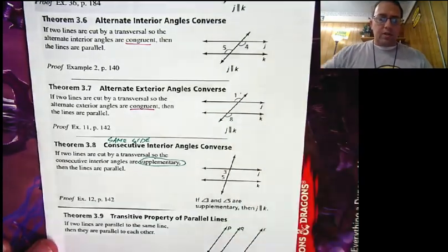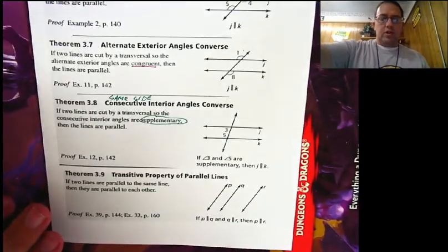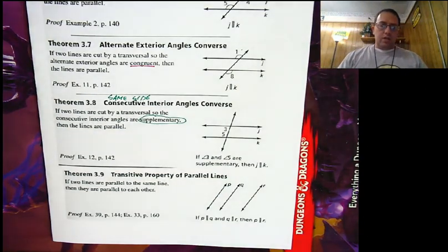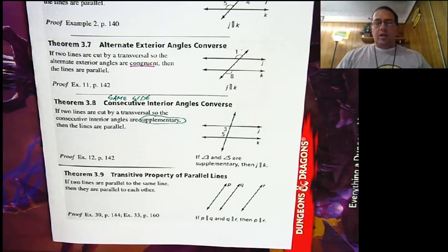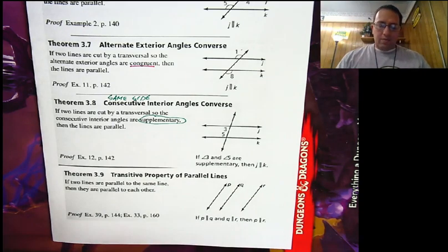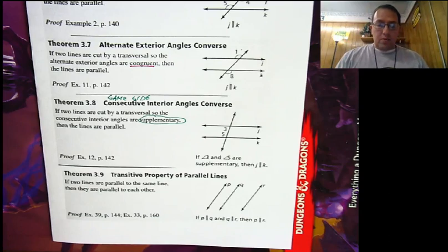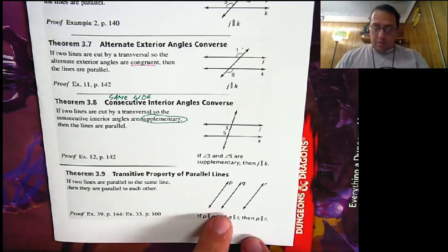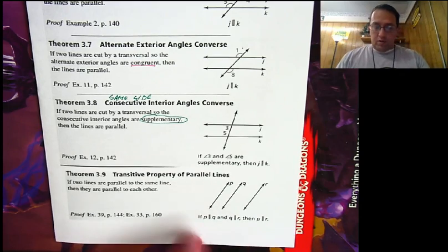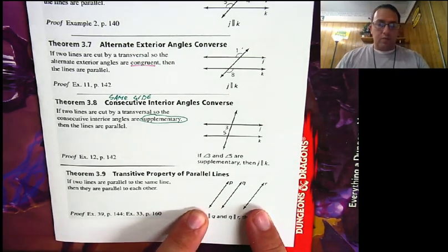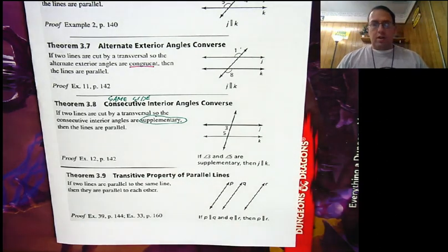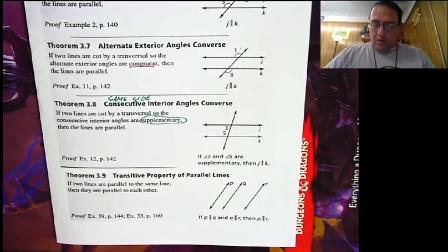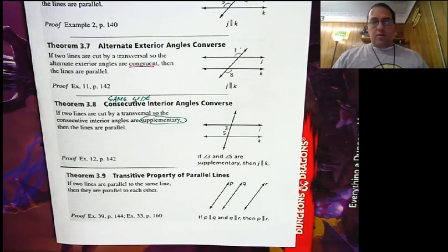We do have one completely new theorem here, and this is the transitive property of parallel lines. You all remember the transitive property of equality or congruence — if two things are congruent to the same thing, then they are congruent to each other. Same thing is true with parallel lines: if two lines are parallel to the same line, then they are parallel to each other. So since p is parallel to q and r is parallel to q, then p is parallel to r.